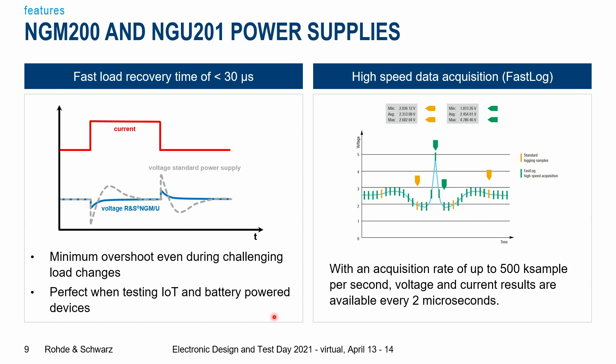The next thing is the high-speed data acquisition. With the NGM and NGU power supplies, you can sample at up to 500,000 samples per second, meaning you get a voltage and current value every two microseconds. A standard power supply may only sample a few times per second, causing you to miss very short but high current spikes. With the NGM and NGU sampling every two microseconds, you will capture every drop and every peak to get the real power consumption of your device.